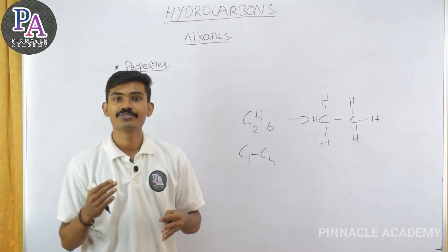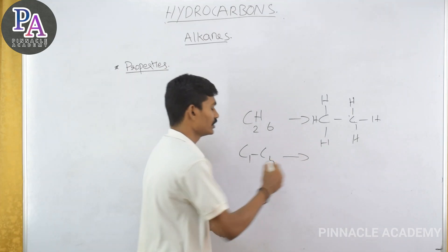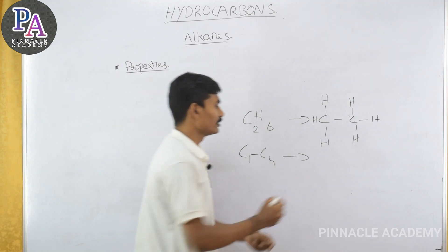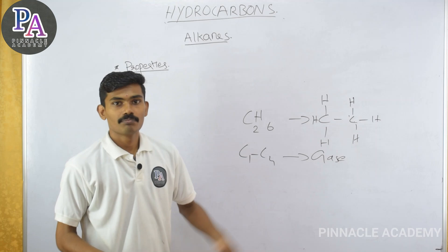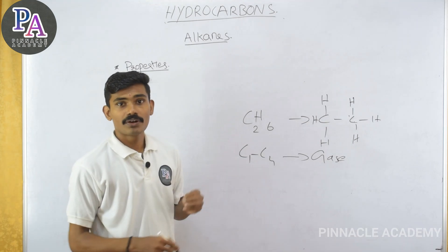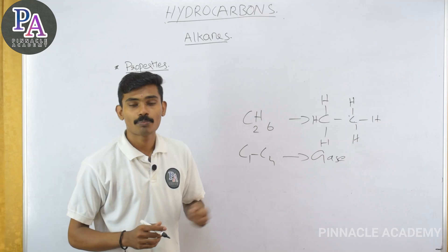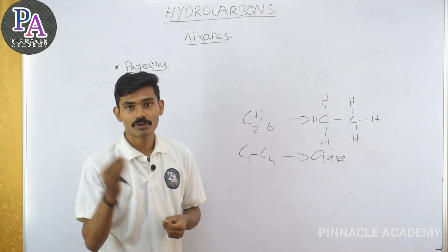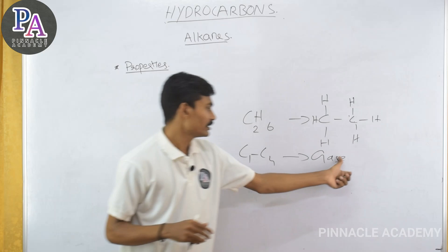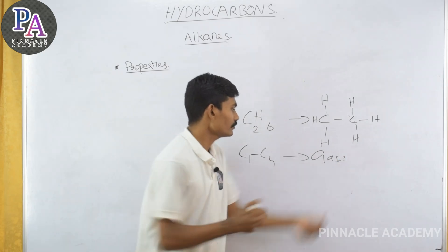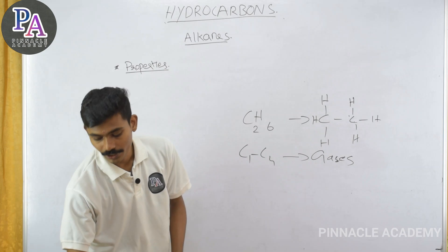Alkanes are long chain, straight, saturated hydrocarbons. C1 to C4 — methane, ethane, propane, butane — these are gases. One example is LPG, which contains propane and butane. So C1 to C4 alkanes are gases.